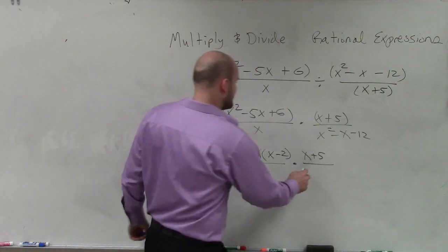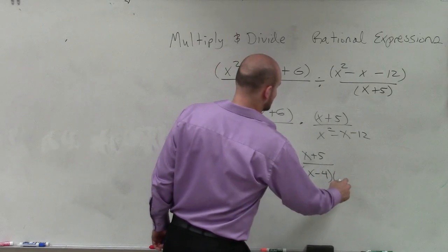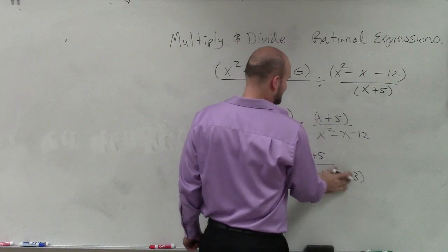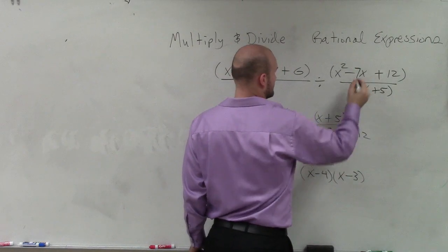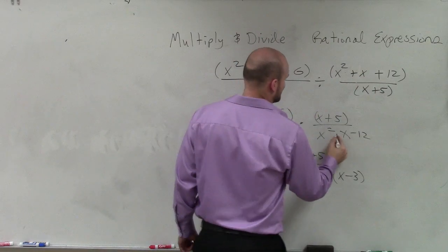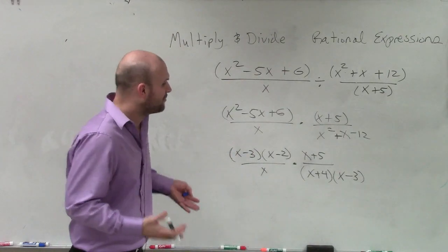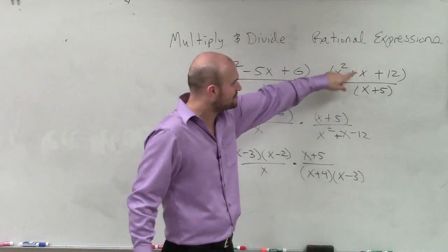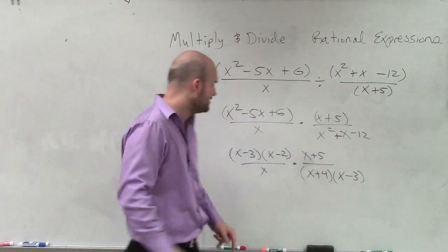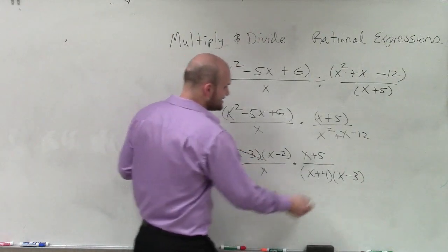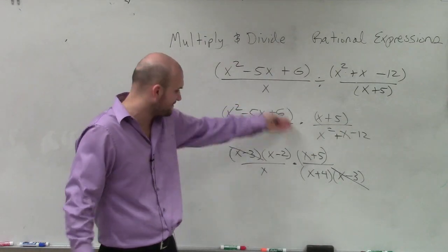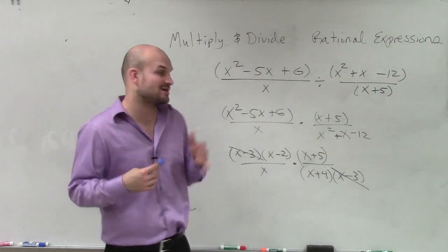Factoring x² + x − 12 gives us (x + 4)(x − 3). Now I see that the (x − 3)'s divide out to 1. That makes this problem much simpler — all I have to do is multiply (x − 2)(x + 5) and divide by x times (x + 4). That will be my simplified version of the rational expression after multiplying and dividing. Thanks.